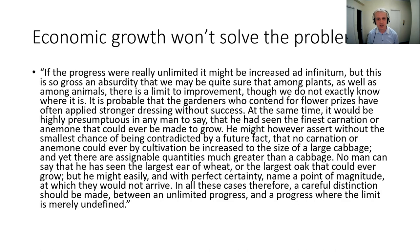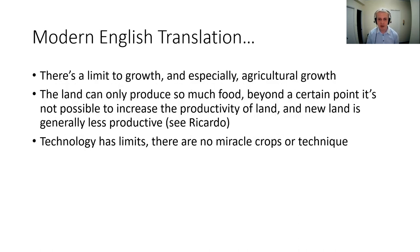Agricultural productivity cannot grow forever. Soil can only grow so much; it cannot expand indefinitely. New land is generally less productive than land currently being farmed — farmers have probably taken up the best land already. Technology has limits too — there are no miracle crops or techniques that can get us out of this problem long-term. Technology can maybe buy us some time and increase productivity a little, but there's no long-term technological fix.